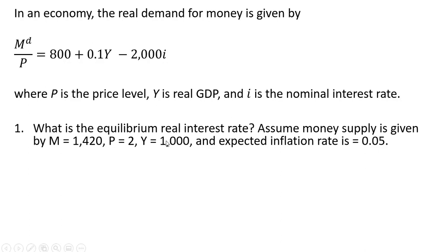What is the equilibrium real interest rate? Assume the money supply is given by M equals 1,420, the price level is 2, real income is 1,000, and the expected inflation rate is 5%.